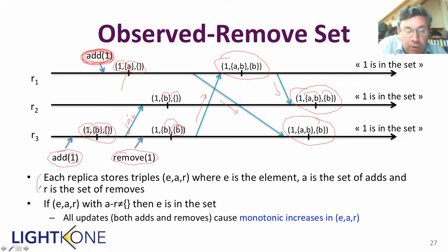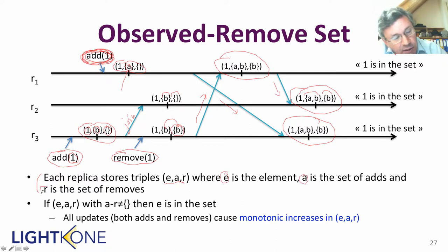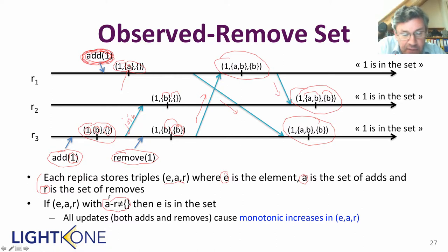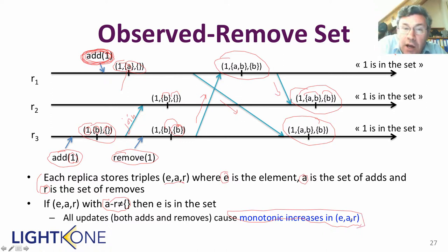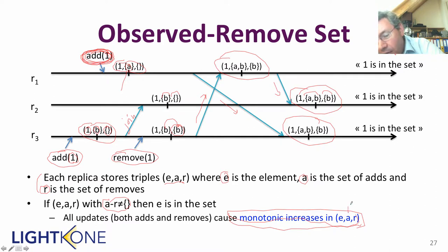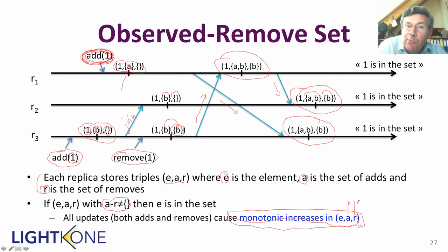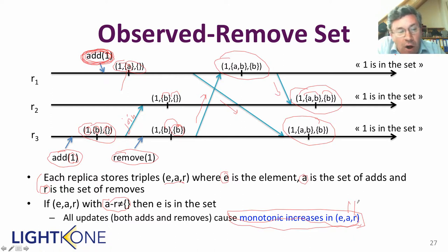Each replica stores a triple (e, a, r): e is the element, a is a set of adds, r is a set of removes. If a minus r is non-empty, then e is in the set. Very importantly, all updates — both adds and removes — will cause monotonic increases in (e, a, r). The a and r sets will only increase, so it's still going up the lattice even though we can add and remove. And with only replica-to-replica communication, all three replicas will agree on the value at the end.